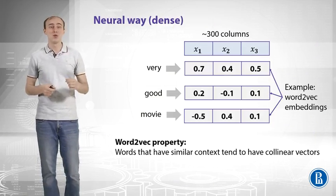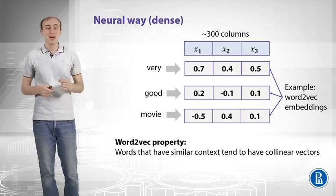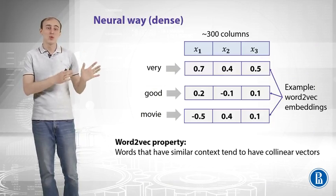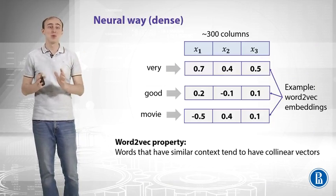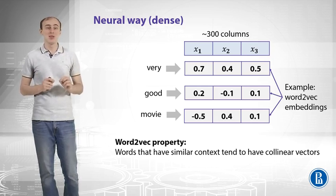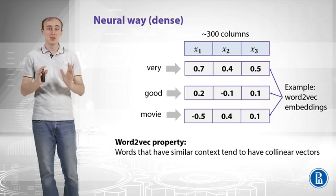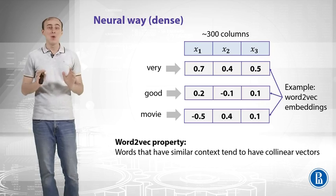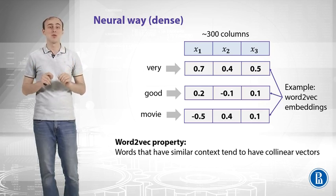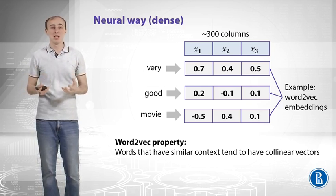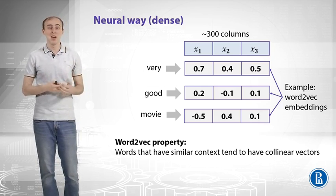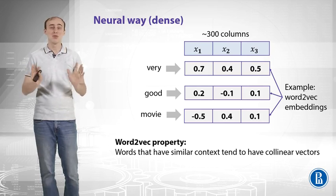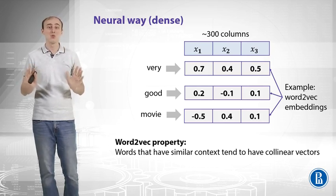Let's move to the neural network way. Opposite to the sparse representation in bag of words, neural networks prefer dense representations. That means we can replace each word with a dense vector that is much shorter — it can have 300 values with real-valued entries. An example of such vectors is word2vec embeddings, which are pre-trained in an unsupervised manner.